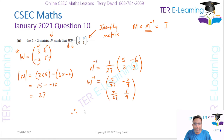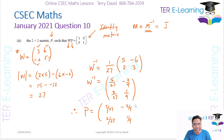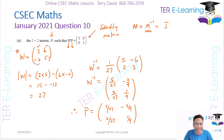So the matrix P that they're asking about is [5/27, -2/9; 2/27, 1/9]. That's the inverse matrix, or the matrix P they want us to find.